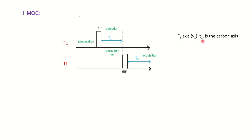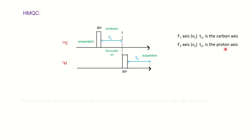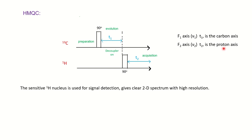In HMQC, the f1 axis with respect to t1 belongs to the carbon axis — which is just opposite to HETCOR — and the f2 axis with respect to t2 belongs to the proton axis, giving high resolution.